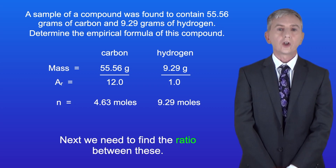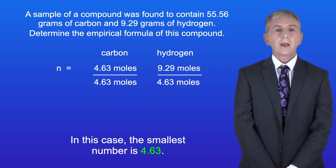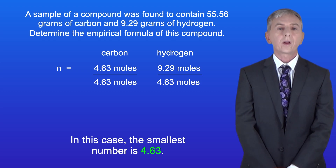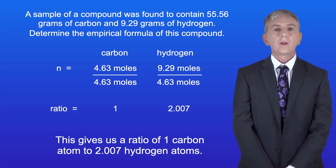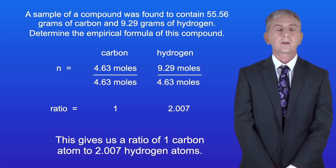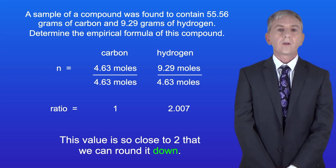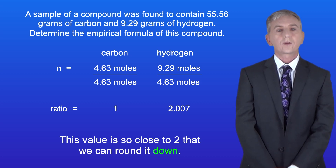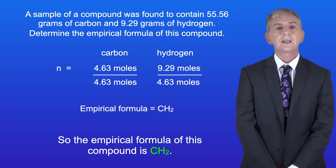Next we need to find the ratio between these, and to do that we divide them both by the smallest number. In this case the smallest number is 4.63. This gives us a ratio of one carbon atom to 2.007 hydrogen atoms. Now this value is so close to 2 that we can round it down. So the empirical formula of this compound is CH2.